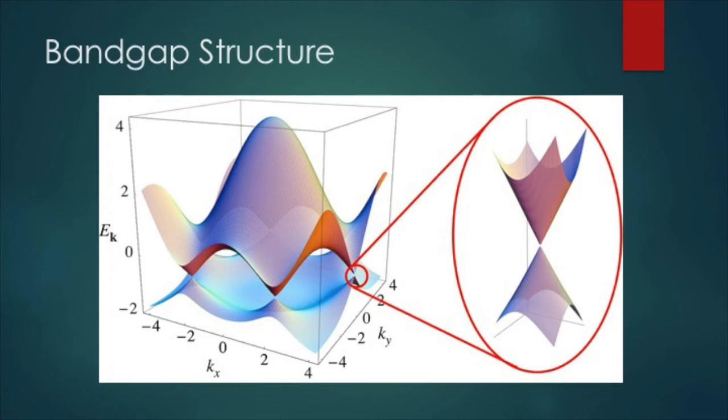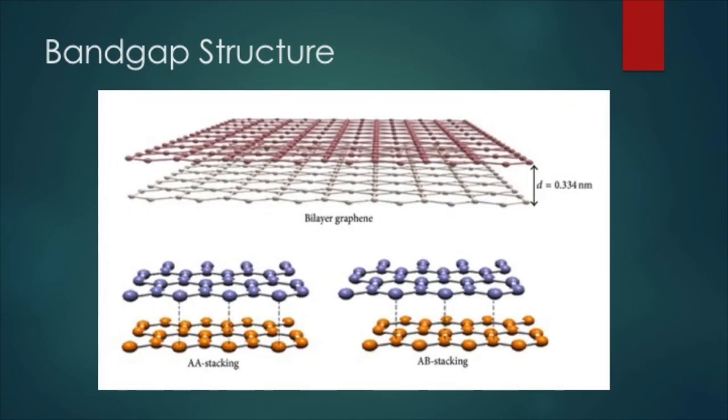However, graphene can be induced to have a bandgap by a variety of methods, including classical N-type or P-type doping, hydrogenation, and by layering two sheets of graphene to form bilayer graphene. Bilayer graphene has an easily tunable bandgap structure, which makes it ideal for applications in graphene-based electronic devices.